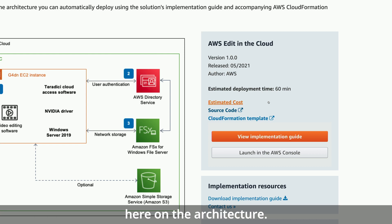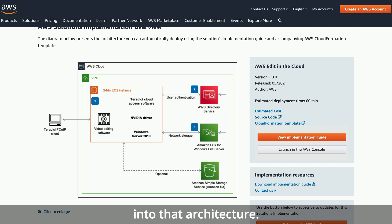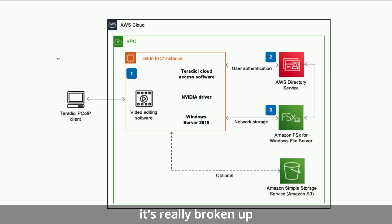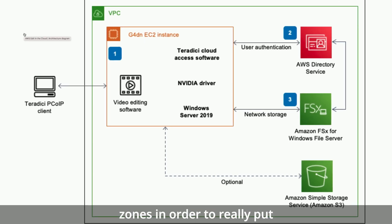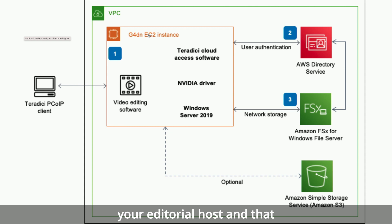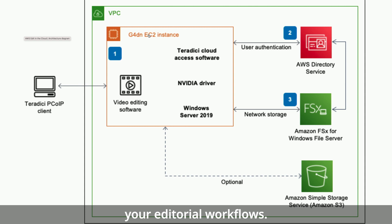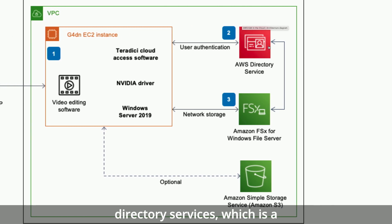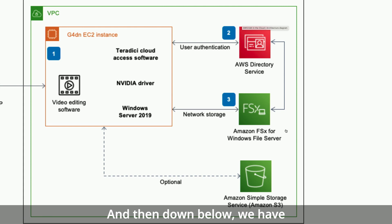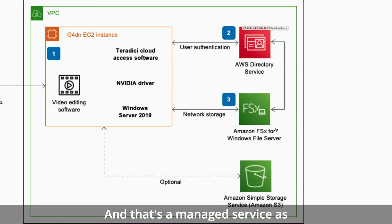The architecture is broken up into multiple components. It has a VPC and availability zones to put together all the components. We have our G4DN EC2 instance which is your editorial host, and that uses our NVIDIA T4 graphics card so you get a familiar experience for your editorial workflows. On the other side we have our AWS Directory Services, which is a managed service for Active Directory as our authentication system. Down below we have our FSx for Windows File Server, which is our NAS or shared file system — also a managed service.